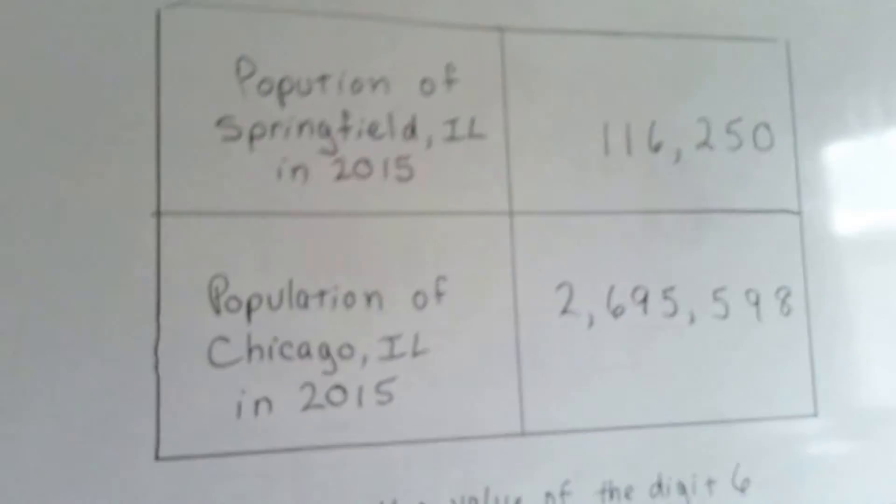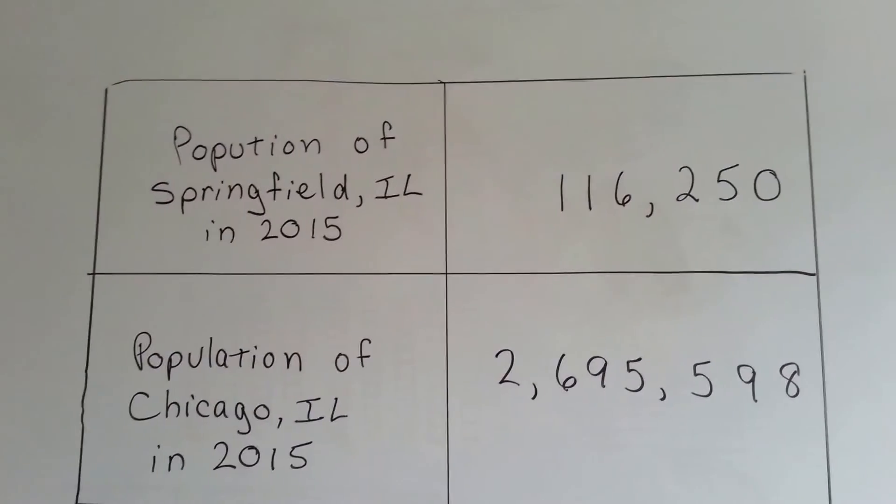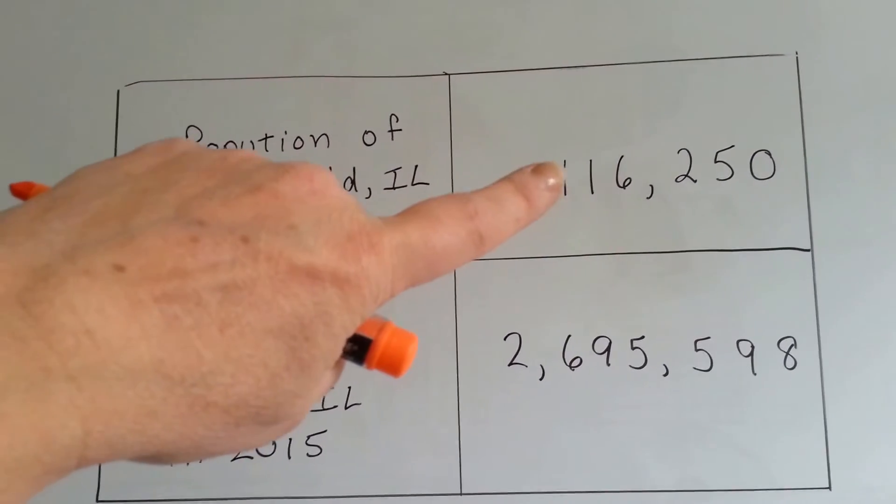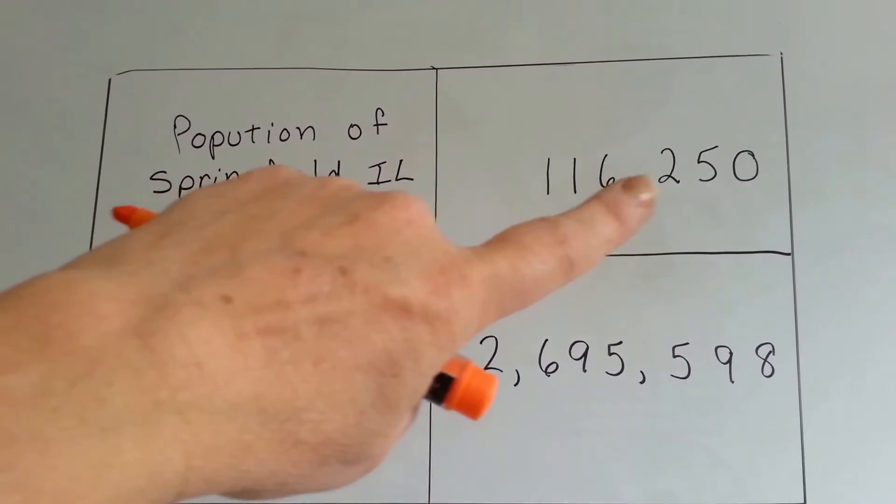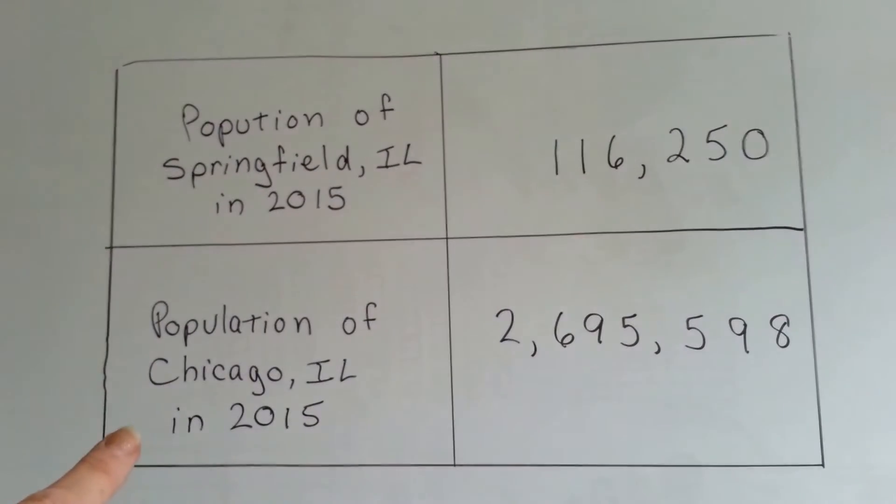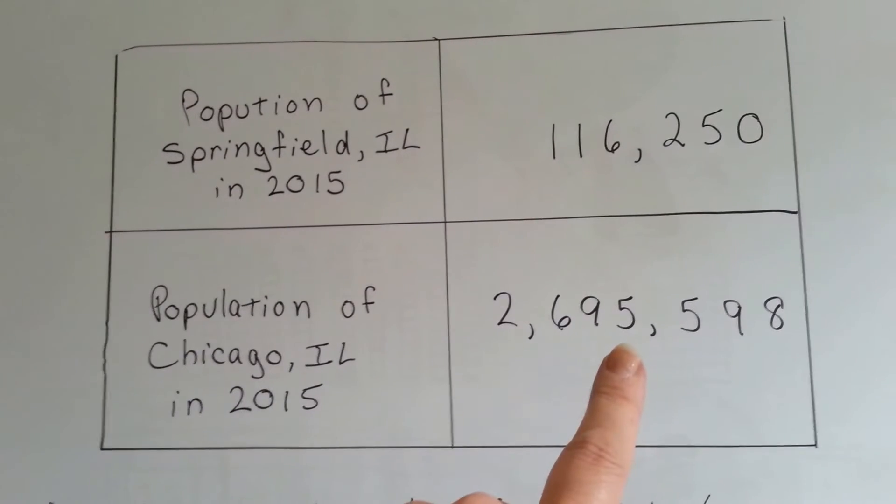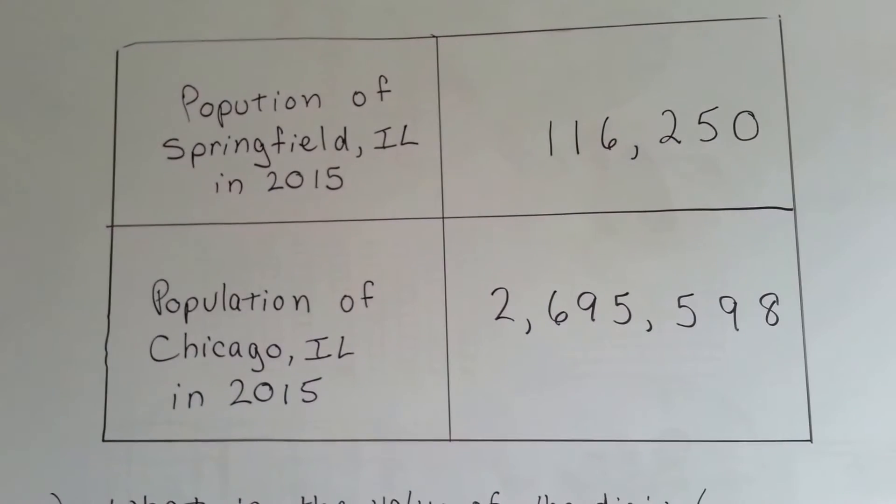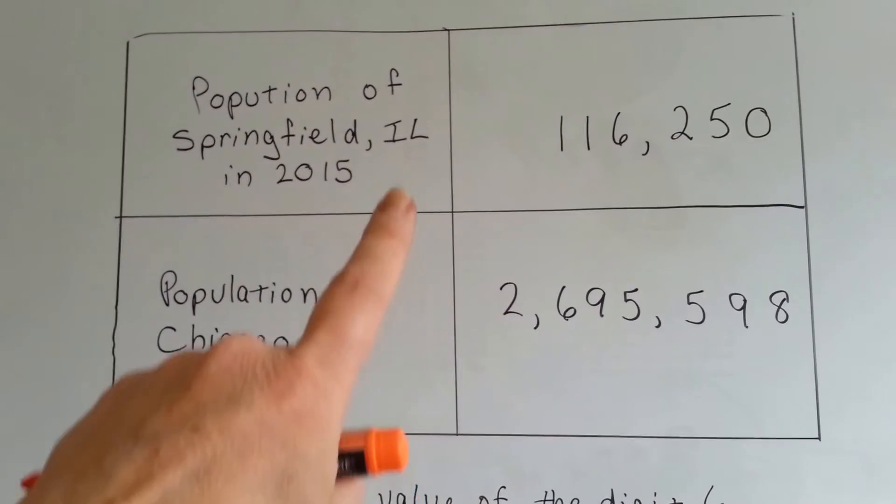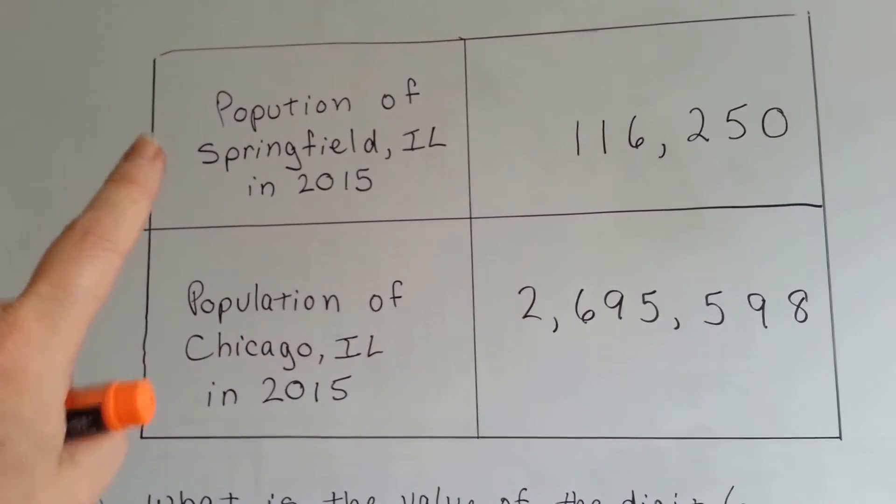So now I have a table over here. Take a look. The population of Springfield, Illinois in the year 2015 was 116,250. The population of Chicago, Illinois in 2015 was 2,695,598. Chicago is a much bigger city than Springfield, even though Springfield is the capital of the state of Illinois.